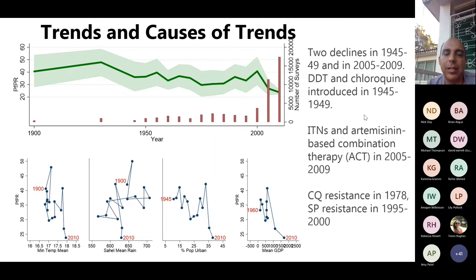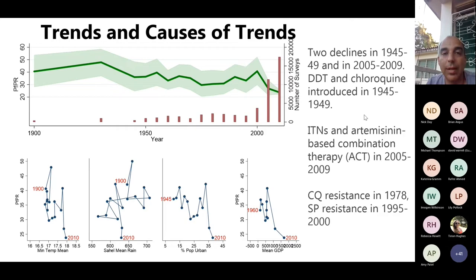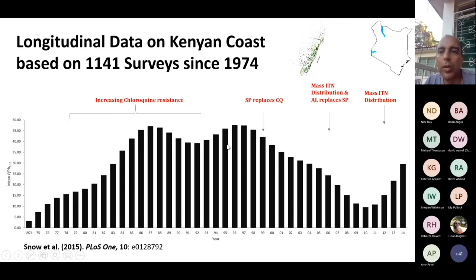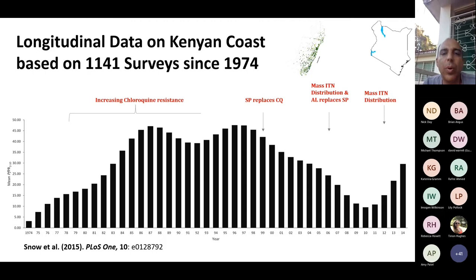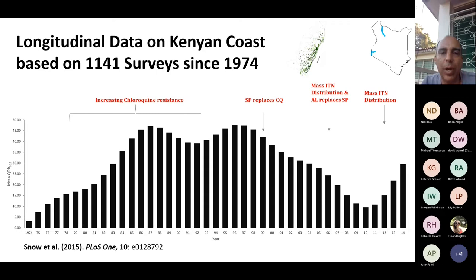It remains complex to predict what will happen with malaria, and I don't think we can model the future based on that. But we can monitor the past and present. These longitudinal data from the Kenyan coast — malaria parasite surveys from 1974 to 2014 — show that with one sentinel location in Africa, there definitely are real trends, not just random noise, and you can relate specific events to the trends we were seeing.